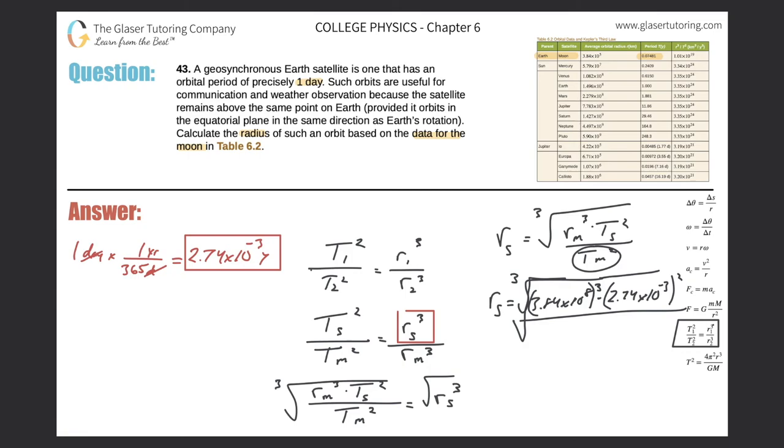By the period of the moon, and the period of the moon in years was 0.07814. And don't forget that is squared, and we're just going to calculate. So let's just take out the calculator. I'm going to do the cube root at the end. So 3.84 times 10 to the eighth cubed, raised to the third, times 2.74 times 10 to the negative three, and that's squared. And then divide all that by 0.07481 squared.